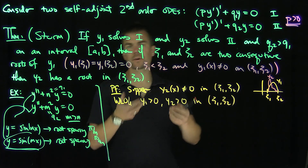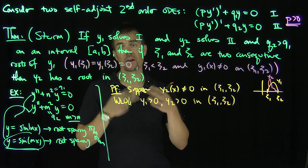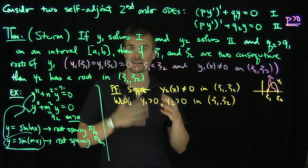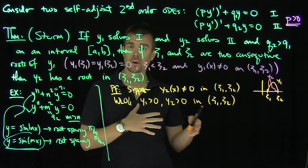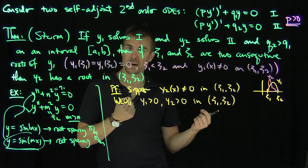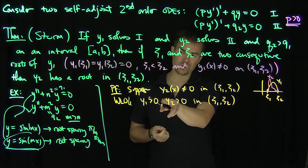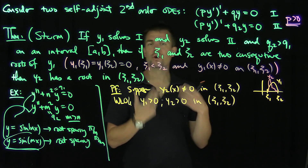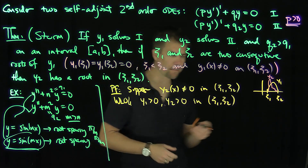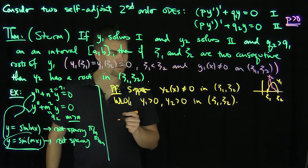The other cases follow from similar reasoning — if they're both negative, or have alternating signs, you can run the same argument. This is essentially a sign-catching argument: we track all the signs and derive a contradiction from the assumption that something positive equals something negative. By adjusting signs, you can handle any combination.